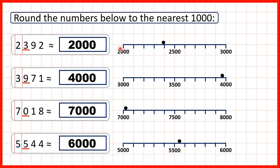For 3,971, if we look at the number line going up in steps of 100, this number is between 3,900 and 4,000. We can see it's closer to 4,000 than to 3,000, so that's why we round up. For 7,018, it's less than 7,100 and in fact very close to 7,000, so we round down. And for 5,544, because the number is more than 5,500, it's closer to 6,000 than to 5,000 — that's why we round up.